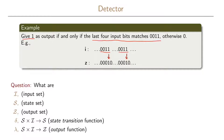We can think about what is the input set, what is the state set, and what is the output set. We also need to define the state transition function and the output function for this detector. The input set is quite clear — it consists of zeros and ones. The output set is also quite clear — it consists of zeros and ones.